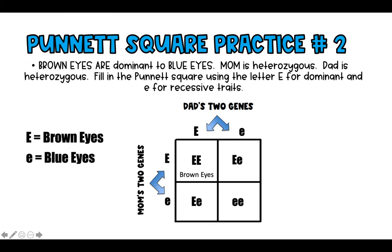In the first square, that child has two dominant genes — two sets of instructions for brown eyes — so they'll have brown eyes. In the second square we have capital E (dominant) and lowercase e (recessive). If you said brown eyes, you're correct, because even though there's an instruction for blue eyes, the only way blue eyes appear is if both sets of instructions are recessive.